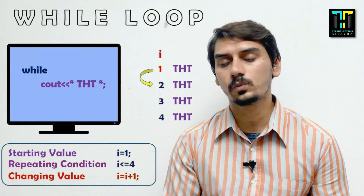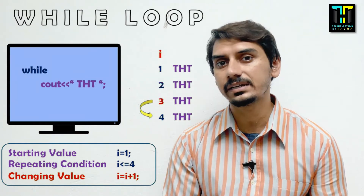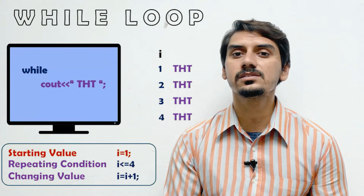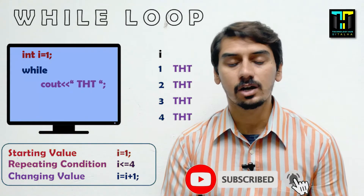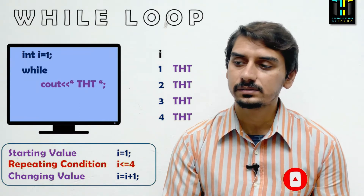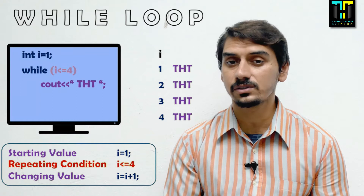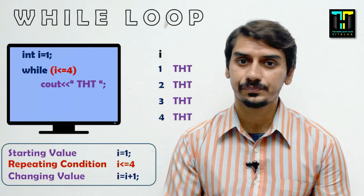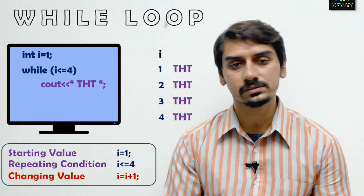In the code, we declare int i = 1, initializing i with the value 1. The second thing is the condition — after the while keyword, we use the condition. In this case the condition is i <= 4. The third thing is the changing value, which means i = i + 1, an increment of 1 in i every time.